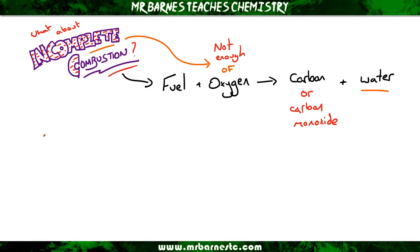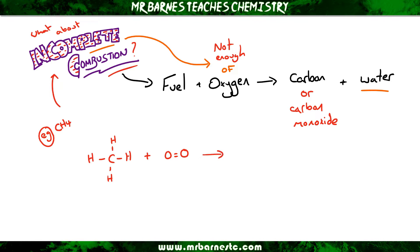For example, if we look at the incomplete combustion of methane, CH4 — you can see I've got one carbon atom bonded to four hydrogen atoms and two oxygen atoms bonded to each other. Now whenever you take any combustion reaction, whether complete or incomplete, water forms first. So I'm going to get H2O.